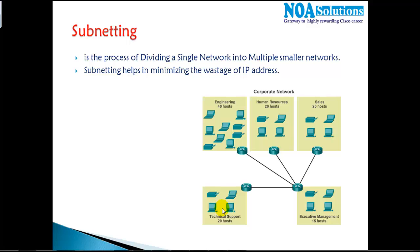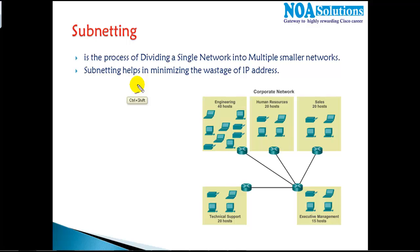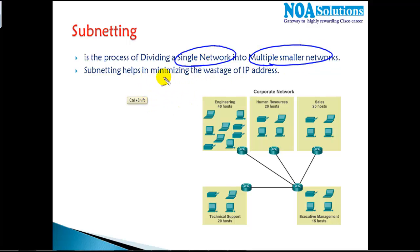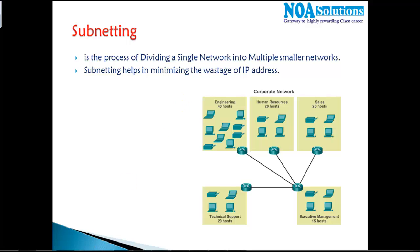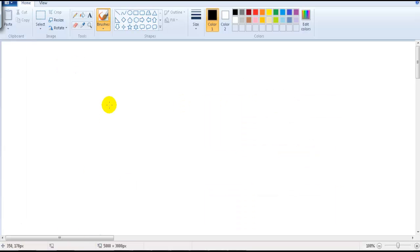In this video I am going to introduce you to some advanced IP addressing topics called subnetting. Subnetting is the process of dividing one single network, or one default network, into multiple smaller networks. It is going to help in minimizing the wastage of the number of IP addresses.